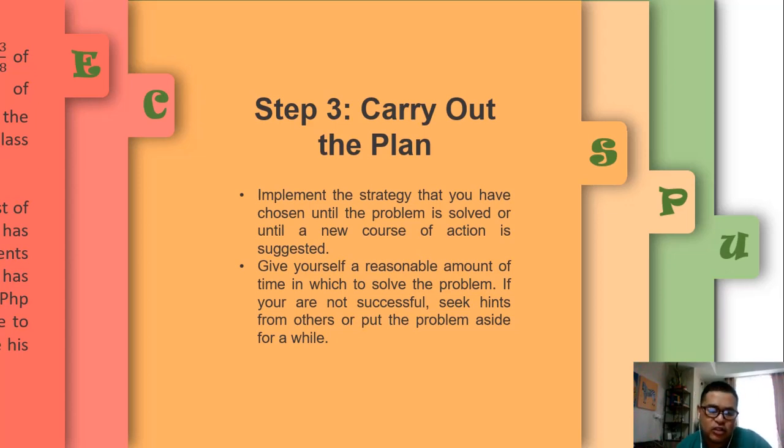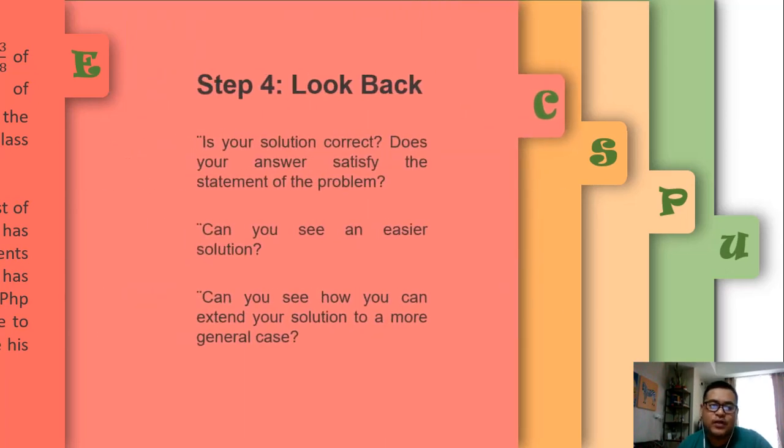And then you try to solve again the problem. So that is carrying out the plan. And of course, number four is to look back. Usually, looking back is reviewing your solutions. Review your solutions, go over your first entry on the solving problem, and then go over one by one.